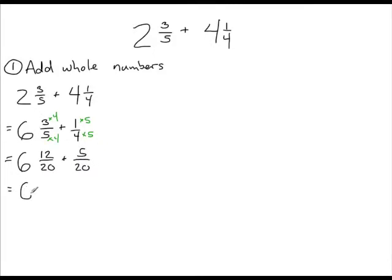On the next line our whole number does not change. Now we can add our numerators: 12 plus 5 is 17, over 20, since the denominator stays the same. So here we have 6 and 17 over 20. We know this is our final answer because there's no number that goes into both 17 and 20 evenly, so the fraction is in its lowest form.